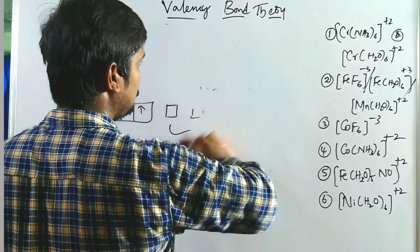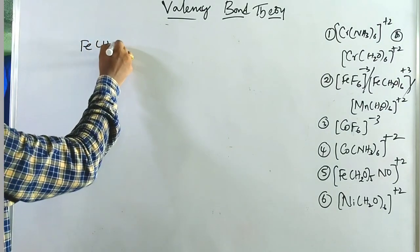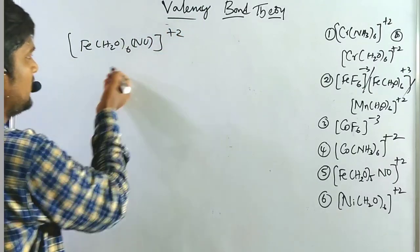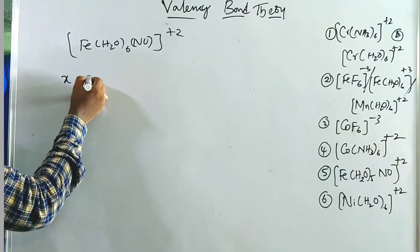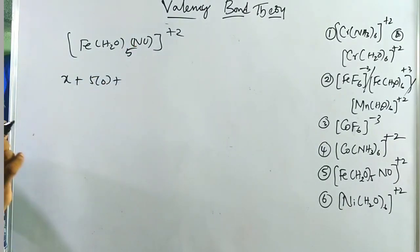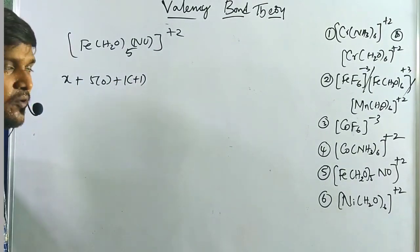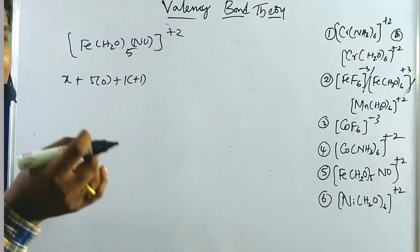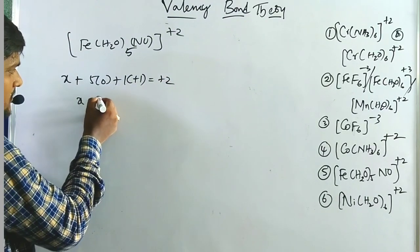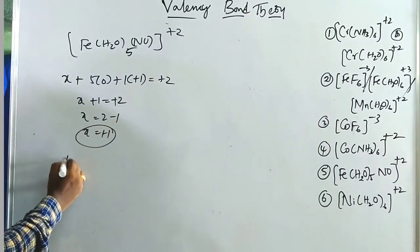The fifth example is the blue ring test complex, which is very important. Here the oxidation state is +2. Calculating the oxidation state of the metal: x + 5(0) + 1(+1) = +2 (the nitrosyl ligand exists in +1 oxidation state according to magnetic moment calculations). So x + 1 = +2, giving x = +1 oxidation state. Iron's configuration is 3d⁶ 4s². Fe⁺¹ means only one electron is present in the 4s orbital.